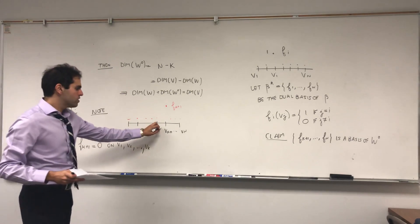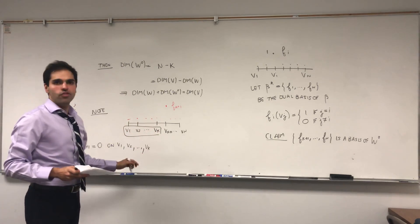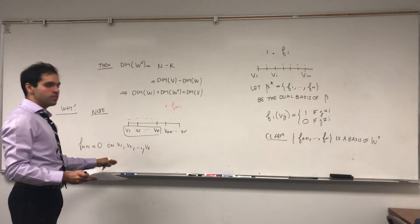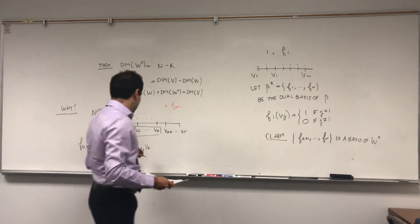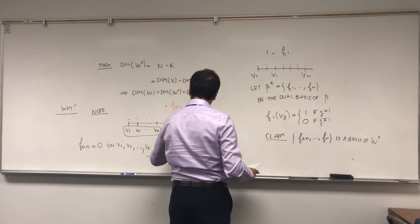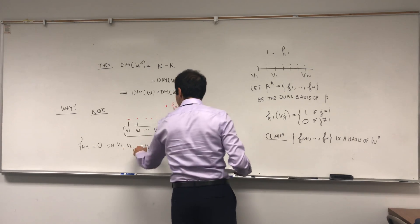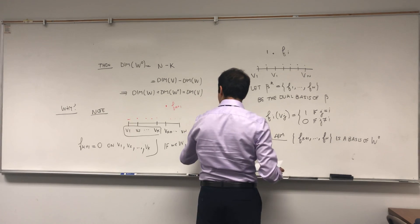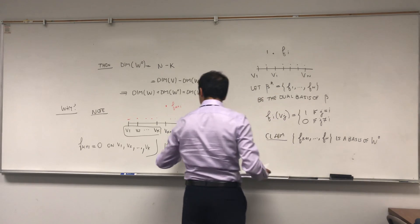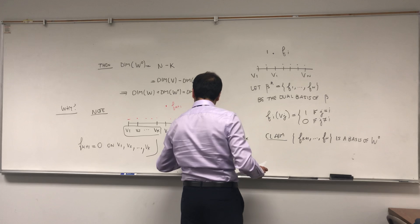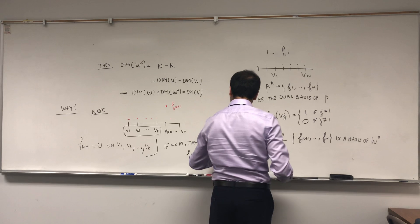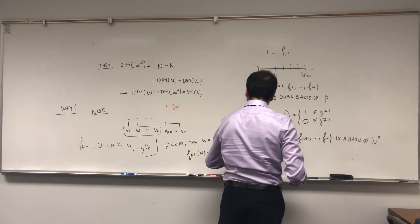In particular, remember those things, they were a basis for W. So because Fk plus one is zero on all those vectors, Fk plus one is zero on all of W. And if you want, let me show this. So if w is in W, then because this is a basis for W, w is a1 v1 plus dot dot dot plus ak vk. So Fk plus one of w, it's Fk plus one of that, of a1 v1 plus dot dot dot plus ak vk.